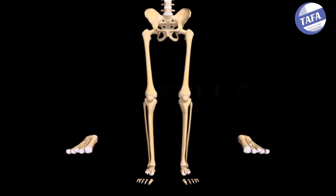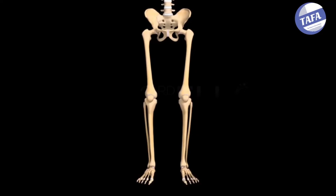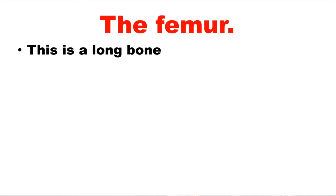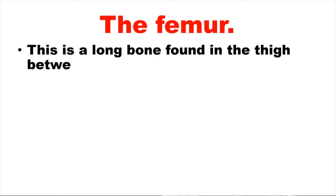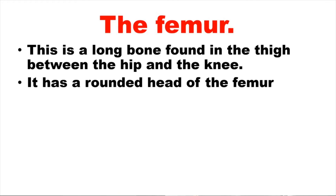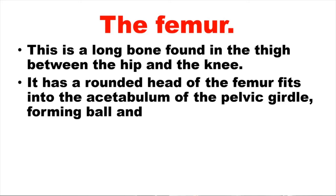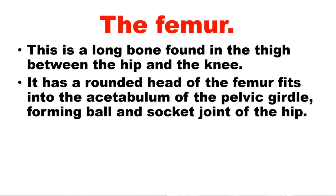So we start with the femur — this is a long bone, referred to as the thigh bone. It is found between the hip and the knee, and it has a rounded head which fits into the acetabulum of the pelvic girdle, forming a ball and socket joint.